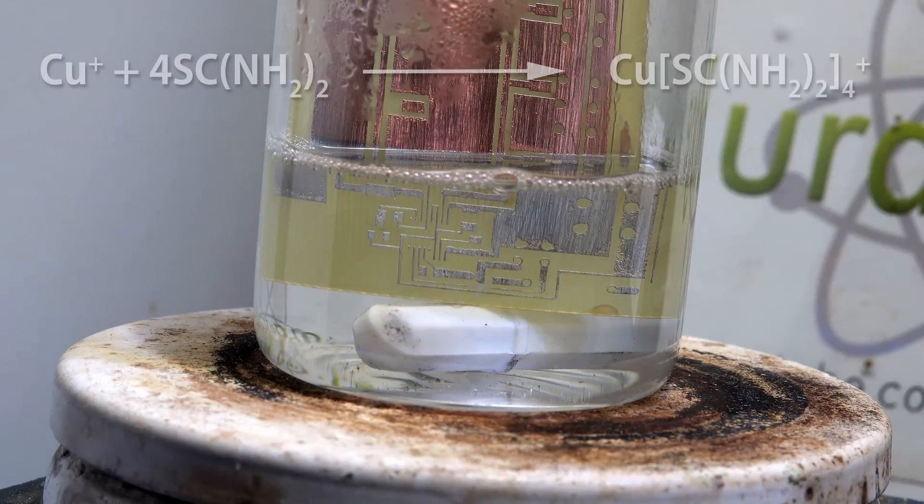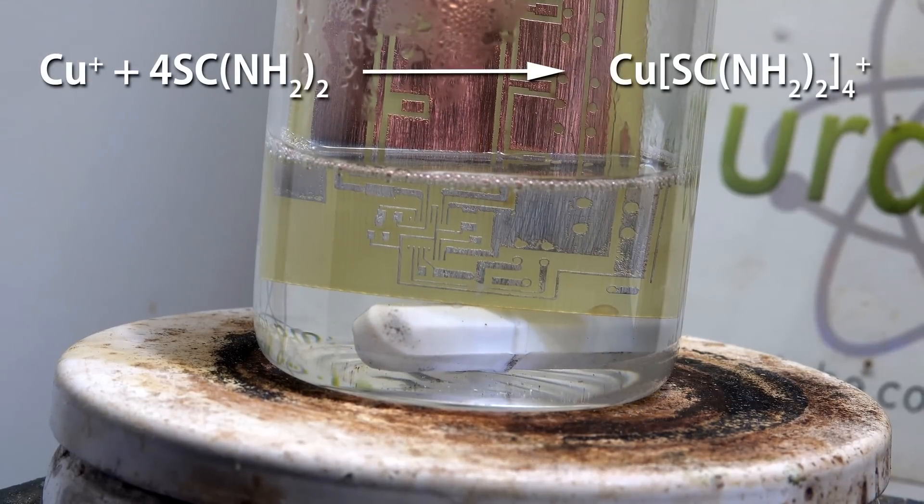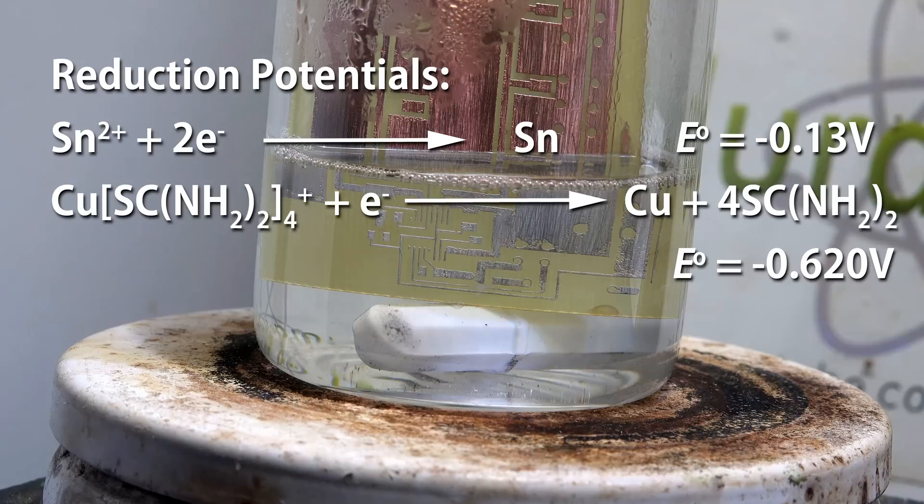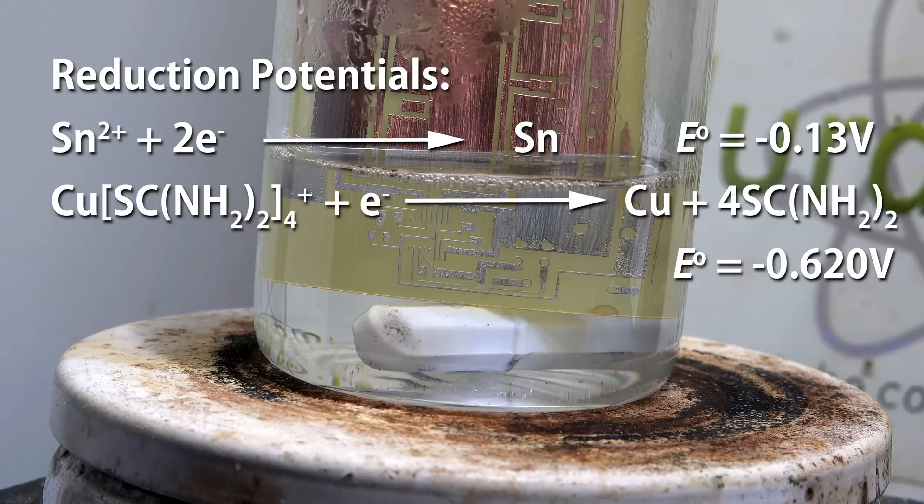Copper forms very strong complexes with a substance called thiourea. It's so strong in fact that this changes its redox potential to below that of tin. We can flip the redox potentials. This redox flipping allows us to displace copper with tin and deposit it.